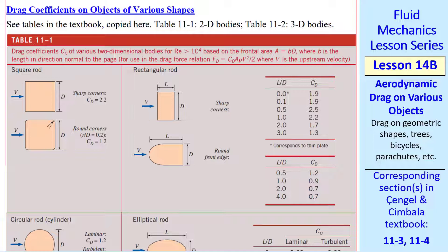You can find drag coefficients in various tables in books and on the internet. In our textbook, Table 11-1 is for 2D bodies and Table 11-2 is for 3D bodies. I'll show both and make a few comments. First, the two-dimensional bodies - in other words, this body is two-dimensional into the page. So the frontal area is A equals BD, where B is the length into the page. To be considered a 2D body, B should be much greater than D.